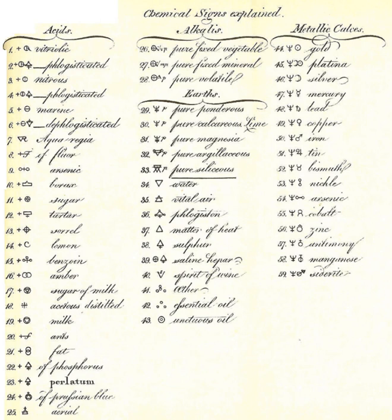Alchemical symbols, originally devised as part of alchemy, were used to denote some elements and some compounds until the 18th century. Although notation like this was mostly standardized, style and symbol varied between alchemists, so this page lists the most common.